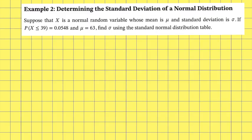Example 2: determining the standard deviation of a normal distribution. Suppose that x is a normal random variable whose mean is mu and standard deviation sigma. If the probability that x is less than or equal to 39 is equal to 0.0548 and mu is equal to 63, find sigma using the standard normal distribution table.